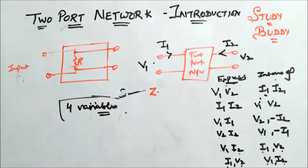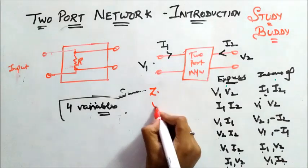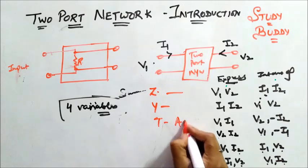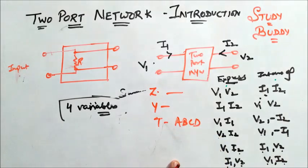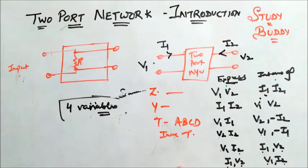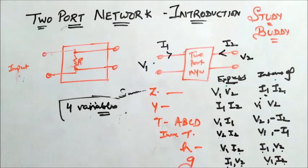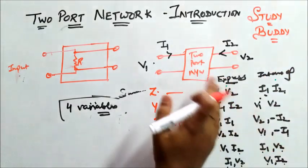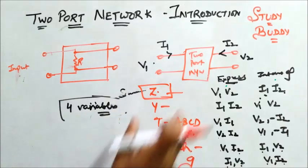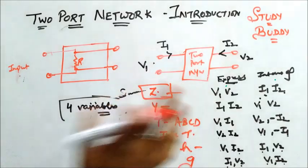The parameters are different and you will have to study all of them. One combination gives Y parameters. Another gives T — transmission parameters, also called ABCD parameters. Then there are inverse transmission parameters. Another gives H parameters, and the last gives G parameters, also called inverse hybrid parameters. All these relations give some matrix equations and we get these different parameter sets.